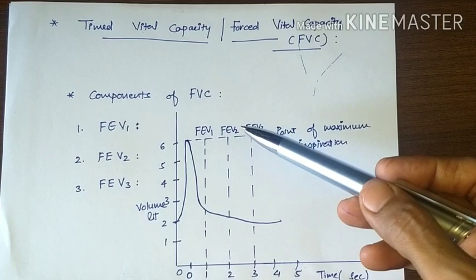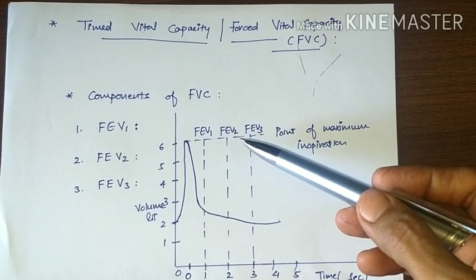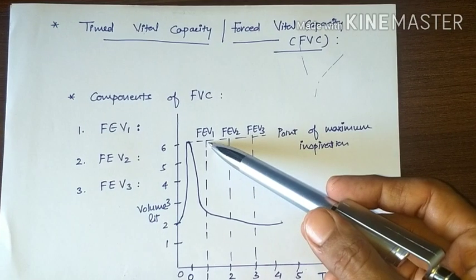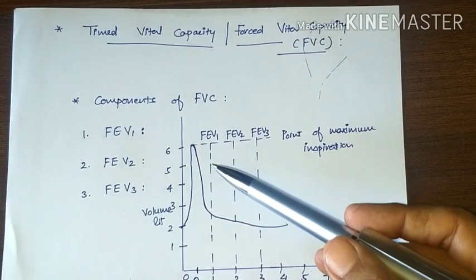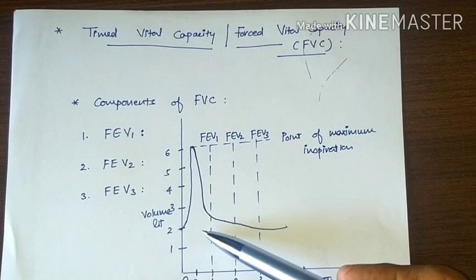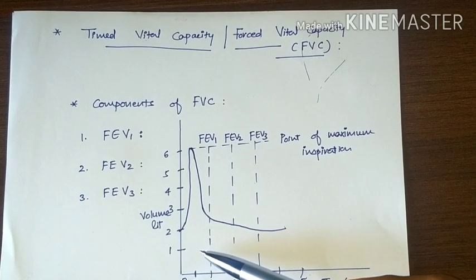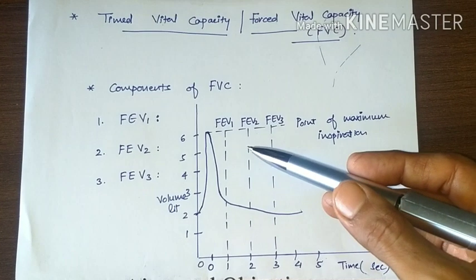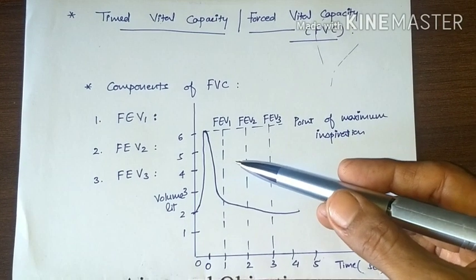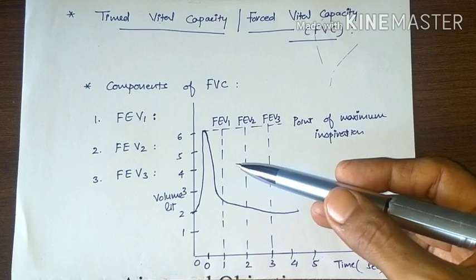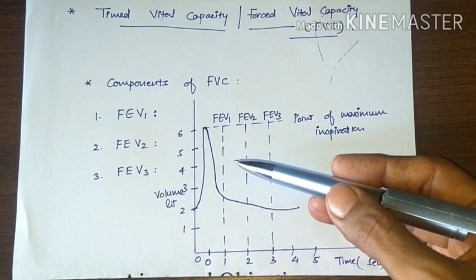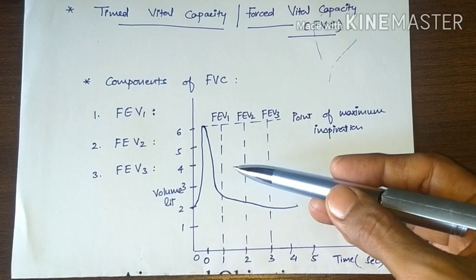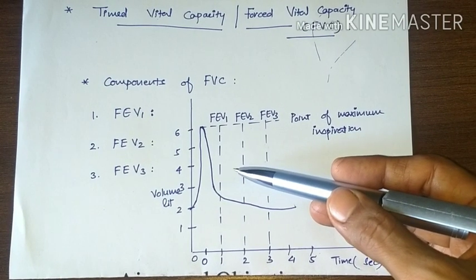FEV1 is the volume of air that is expired in the first second. Here you can see it is about 80% of total FVC. Suppose our FVC is about 4800 ml. Then FEV1 is 80% of this 4800 ml, that is equal to about 3800 ml.